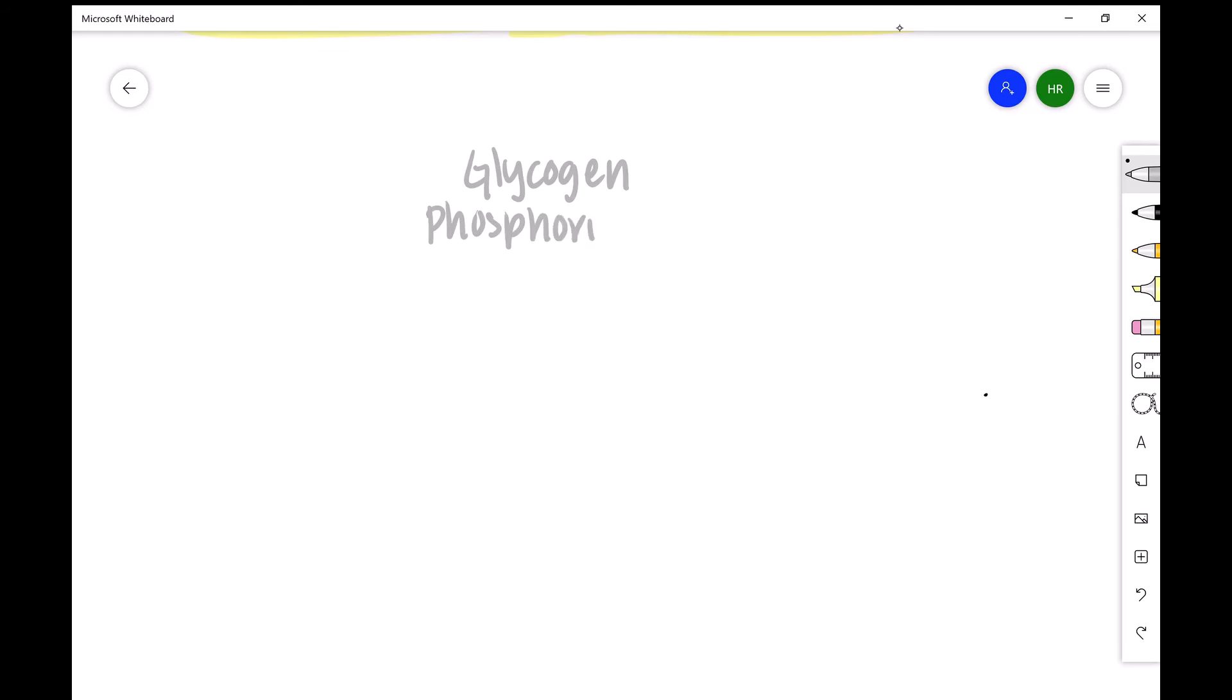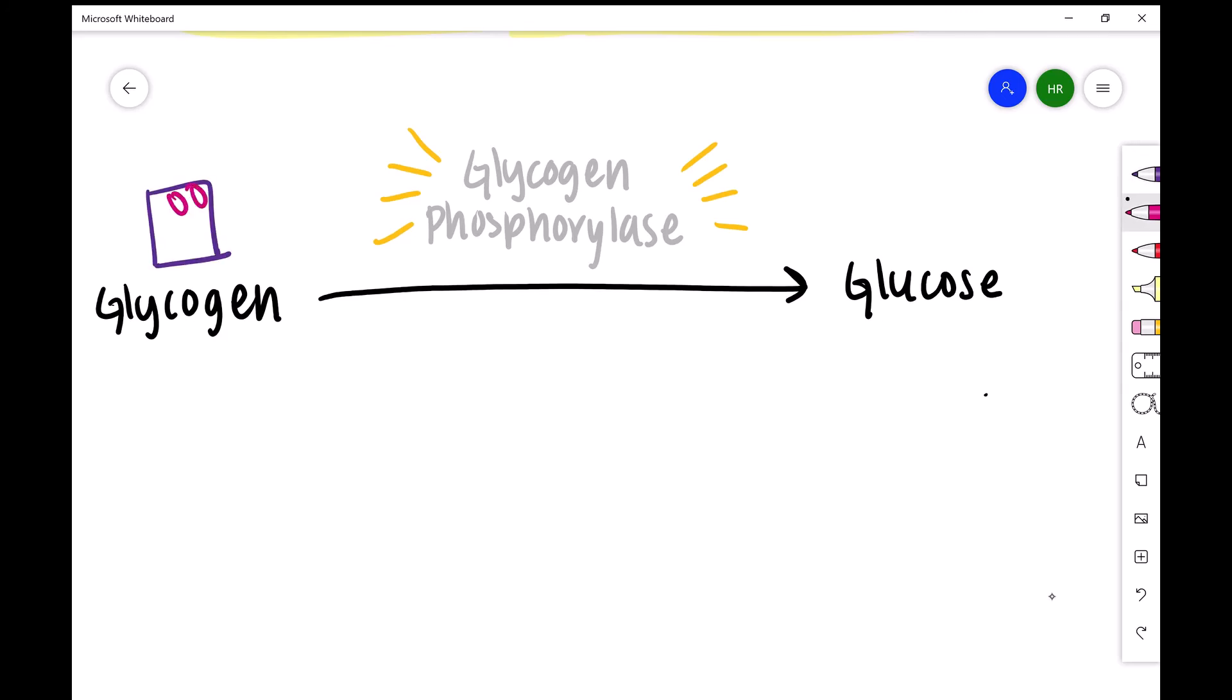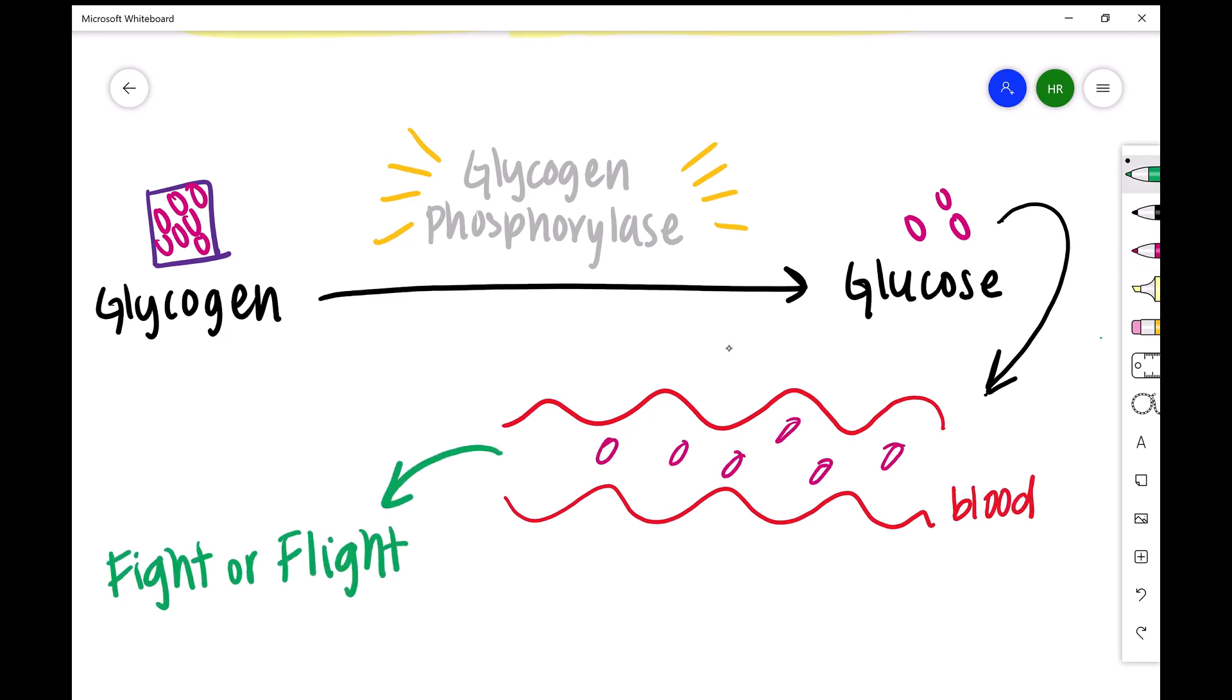Now, the glycogen phosphorylase is the enzyme that is used to break down glycogen storage into glucose. The glucose can now enter the bloodstream, and it is taken up by other cells as fuel to create the epinephrine-induced fight-or-flight response.